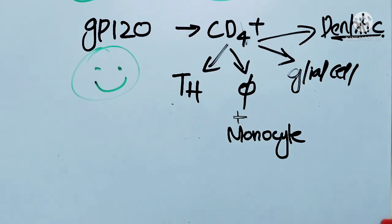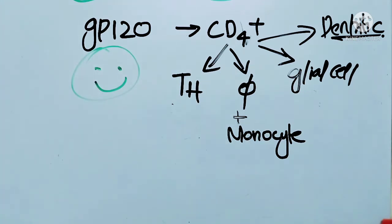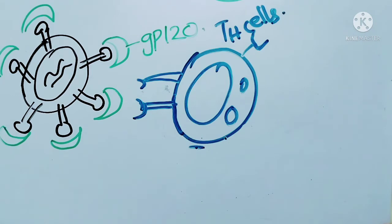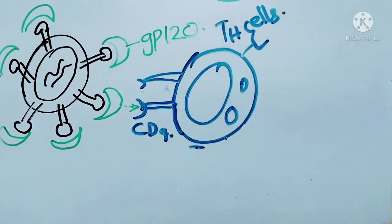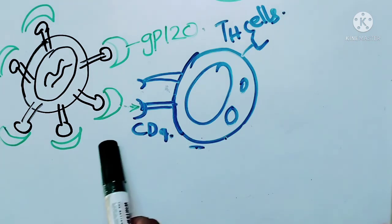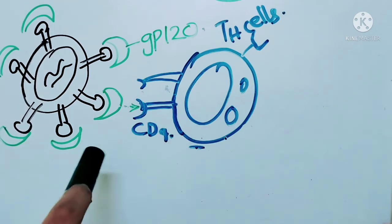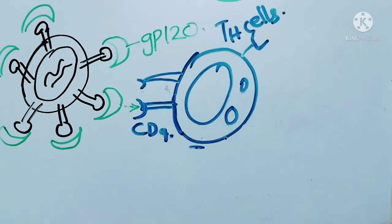HIV and AIDS specifically targets the body's immune cells. GP120 very cleverly captures CD4 receptor cells. This GP120-CD4 interaction is the primary attachment — the first step in viral entry into T helper cells or macrophages.